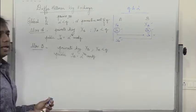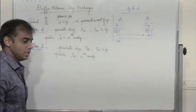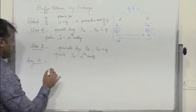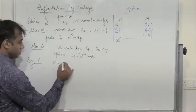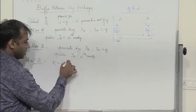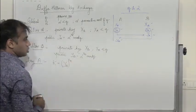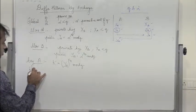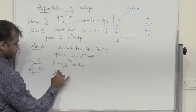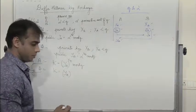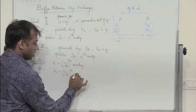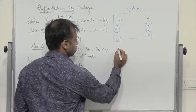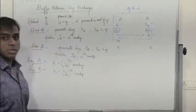User A will generate a secret key — basically generate a number. The secret key K is generated by raising the public key of B to the power of his own private key in mod Q, i.e., K = YB^XA mod Q. Similarly, B generates his own key by raising the public key of A to the power of his own private key: YA^XB mod Q. Incidentally, these two numbers would be the same, so K is generated at both ends.